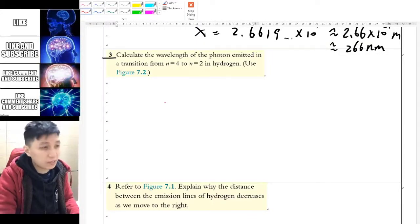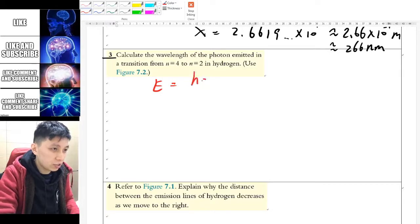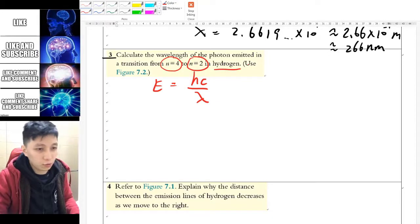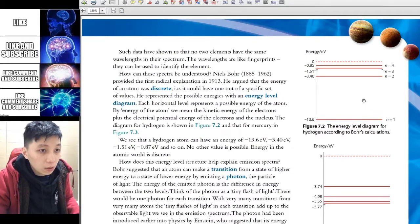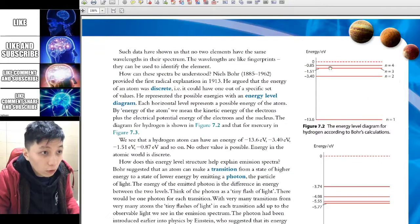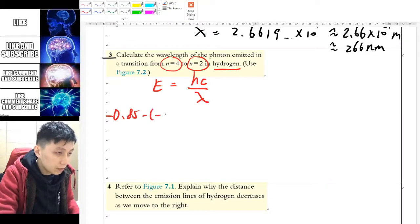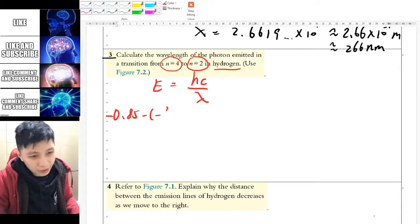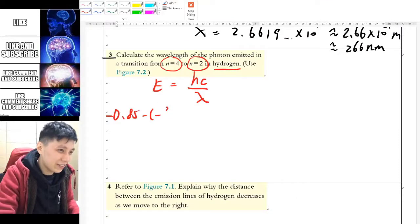Question 3 is extremely similar. So we will have to use the same equation again, E equals to hc over lambda. And the energy level change is n equal to 2 to n equal to 4 hydrogen. So we have to look up that diagram, which should be here. And so, 2 to 4, 0.85, 3.4. So that will be the energy difference.